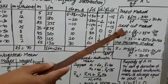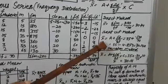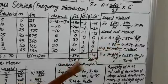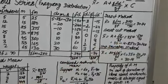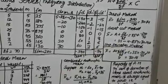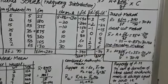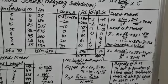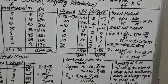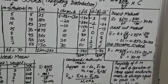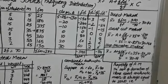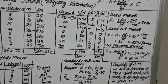Now we write the formula by shortcut method: mean = a + (sigma fd / sigma f) = 35 + (minus 340 / 70) = 35 minus 4.857 = 30.14. So this is how we calculate by shortcut method.